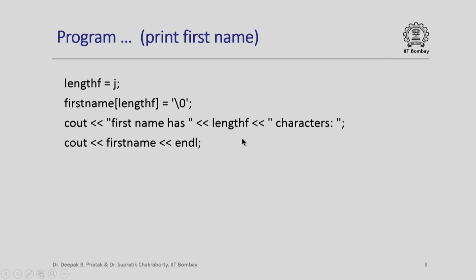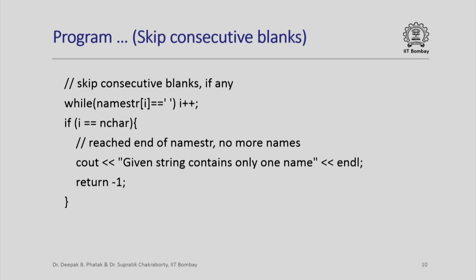We have to now continue doing the same thing with the second string, but before that, if we have any blank spaces which are consecutive, we need to ignore all of them. So here is a small loop which keeps skipping consecutive blanks: while namestring i equal equal blank i plus plus. All that it does is it simply keeps on incrementing i as long as I keep encountering a blank space. What it means is that when this loop ends, i would have the first non-blank character of the second name.